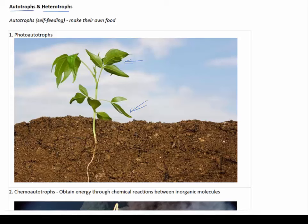Most autotrophs, including plants, use sunlight energy to make glucose by combining carbon dioxide from the air with water through the process of photosynthesis. 'Photo' means light and 'synthesis' means to create. So what they're doing is creating glucose, which is a carbohydrate, by using light energy. These are referred to as photo-autotrophs.